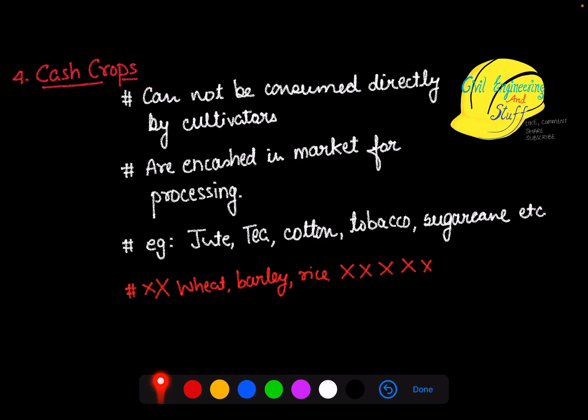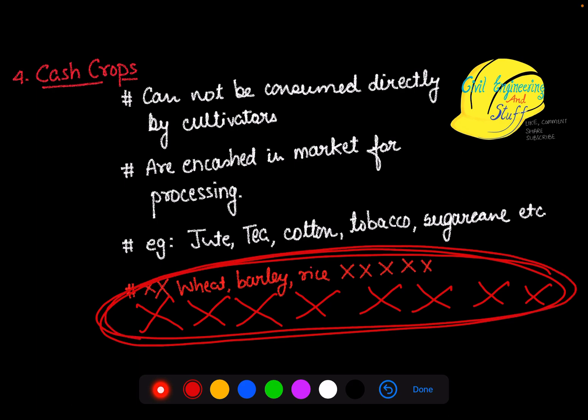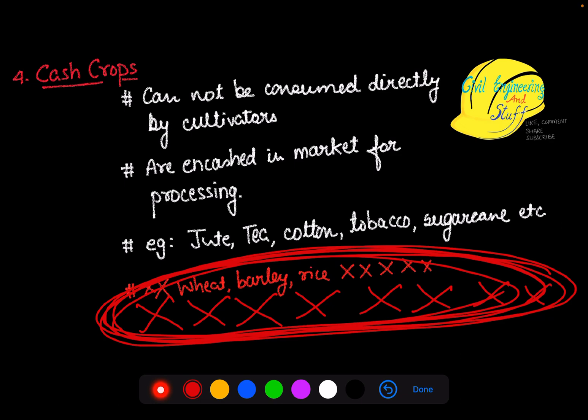The next definition is cash crops. Simply put, cash crops are crops that cannot be consumed directly — they need some processing. Examples include jute, tea, cotton, tobacco, and sugarcane. These crops need to be processed before they can be used; the cultivator cannot consume them directly. In contrast, crops like wheat, barley, and rice can be consumed as they are — those are not cash crops.